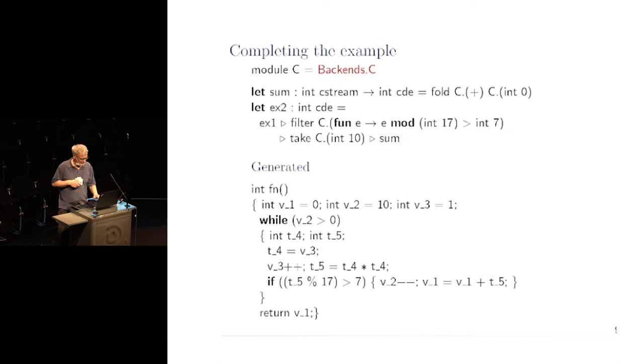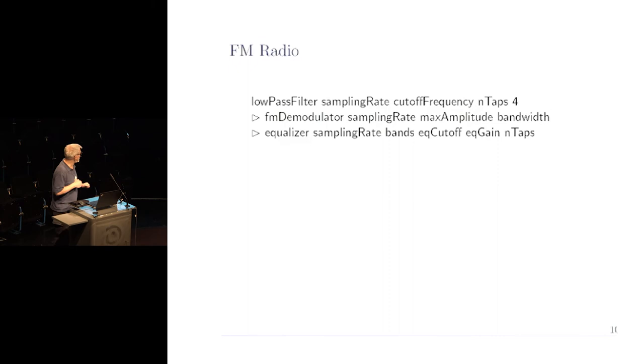There are many more examples, but a more interesting example is FM radio, a software defined radio. This is how the algorithm is represented in a very declarative way. It's a textbook FM radio reception. First perform low-pass filtering on the incoming signal, then we perform FM demodulation, and we perform filtering once again for equalizing the result. There are different parameters, cutoff frequency, et cetera, and taps is the number of taps in the filter, which is 64. It's a quite large filter.